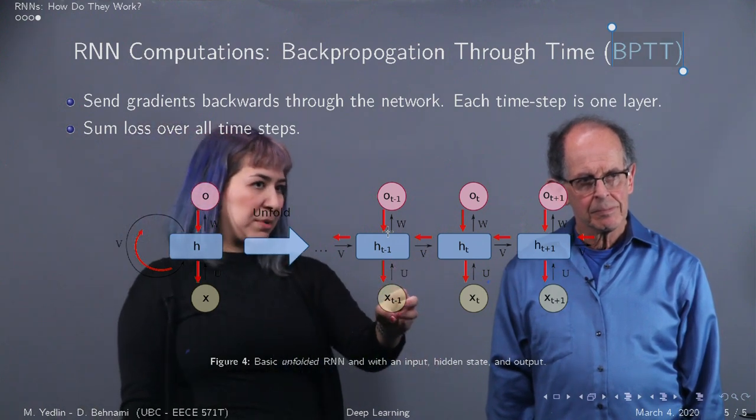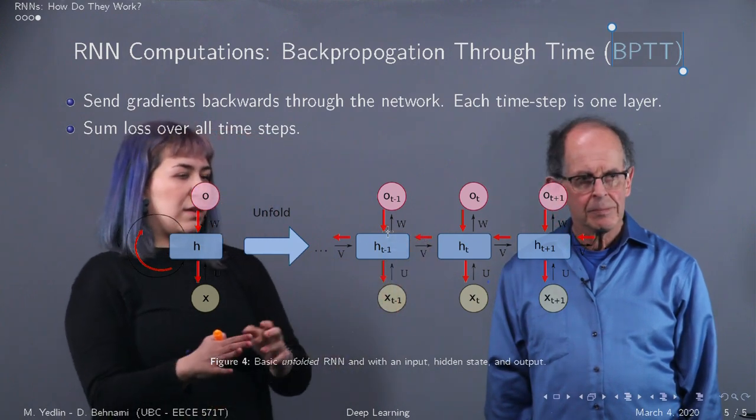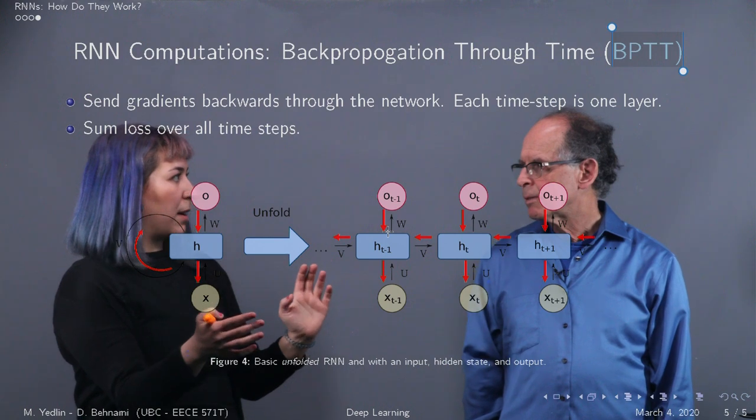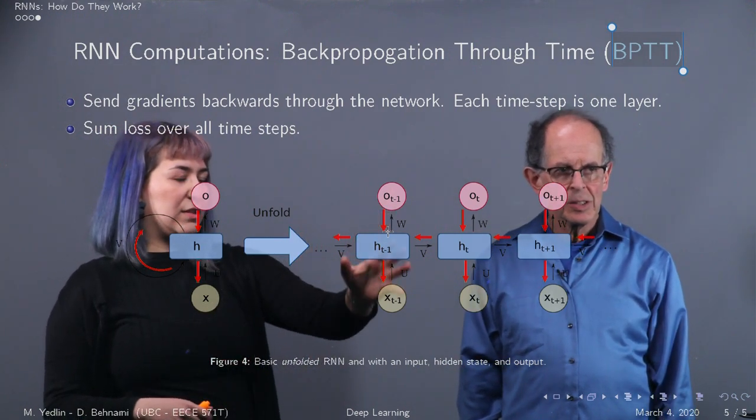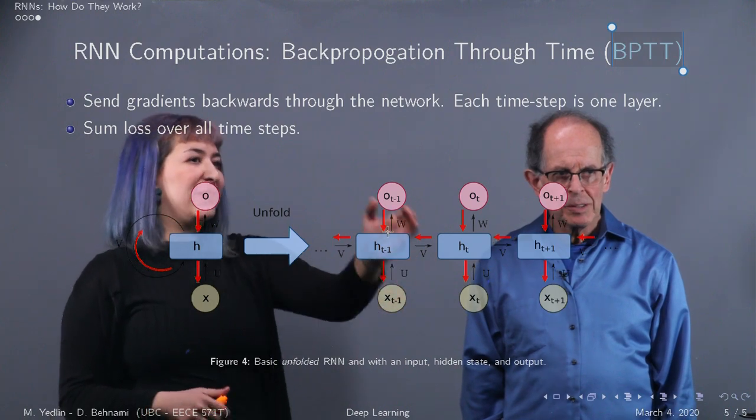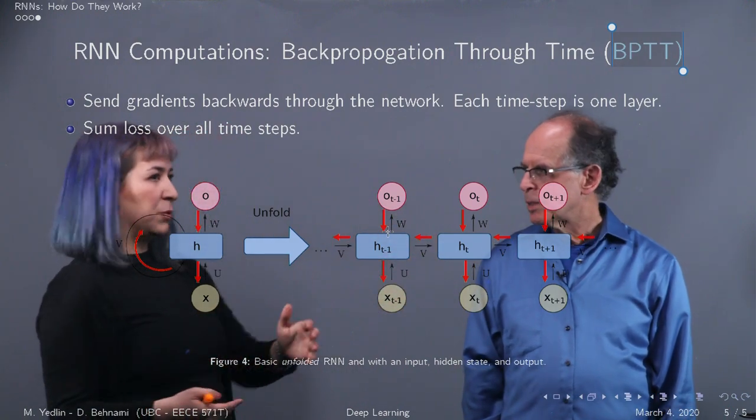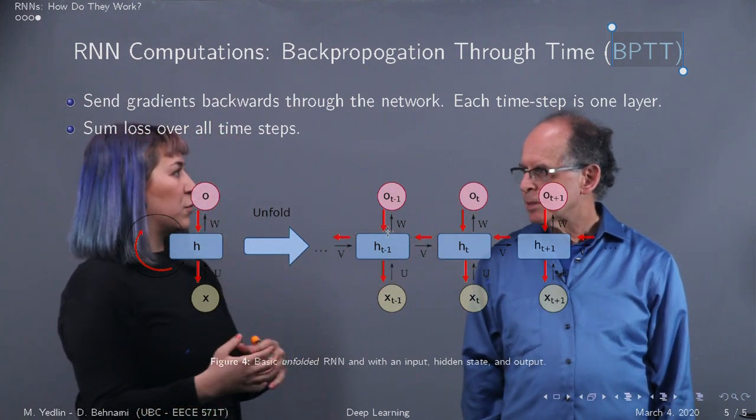And we have three sets of parameters. We have the U's, the V's and the W's. And the difference in this context, the difference between this and how we would do backprop in MLPs is that the parameters U, V, W in each time step are actually tied together. Whereas in an MLP, you would have parameters of the individual layers optimized for separately.